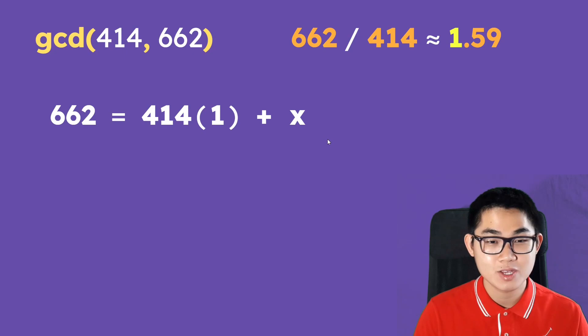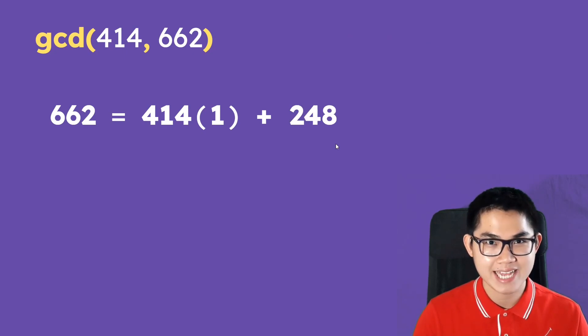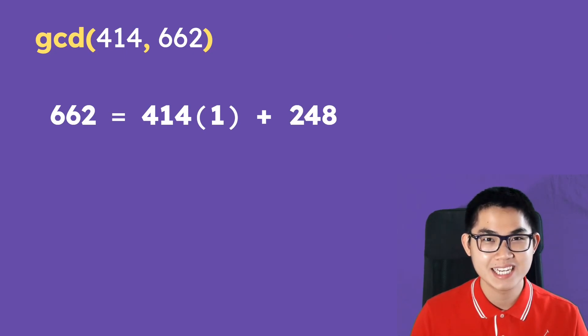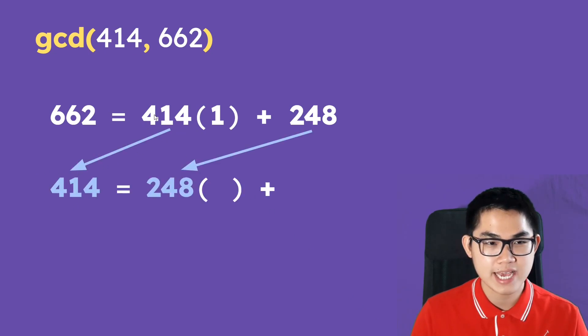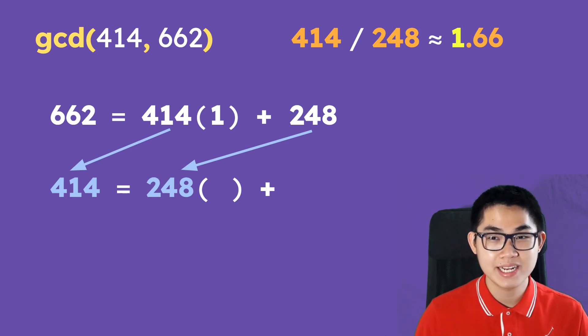If you solve for x you will get 248. We are almost done. The next step is to take the number 414 and drop it down here, so we take this and put it down here, and then we take 248 and put it down here and repeat the process. So take 414 divided by 248 and that gives you approximately 1.66.